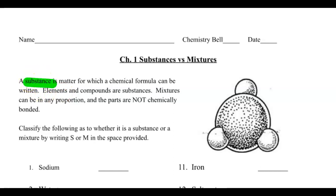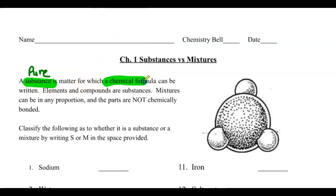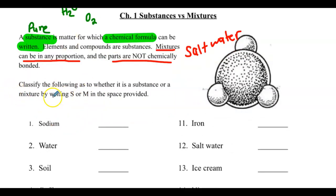Okay, so some definitions. A substance, we also call that a pure substance. The important thing to know is that a pure substance has a chemical formula. You can write it out. So some examples of pure substances would be things like H2O, water. Maybe things like O2, oxygen. However, mixtures can be in any proportion, and the parts are not chemically bonded. For example, we could have something like salt water, like the oceans. You could separate out the salt and the water. So we want to go through and figure out, are all of these a pure substance or a mixture?